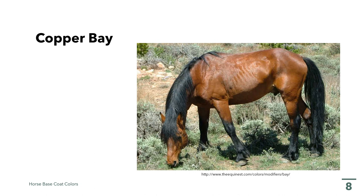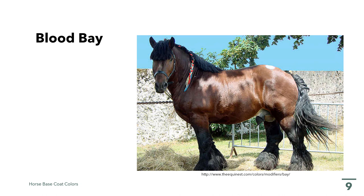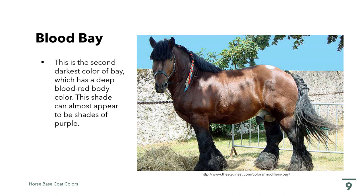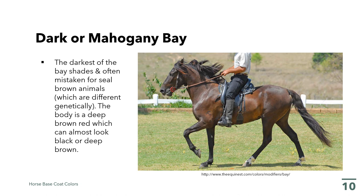The copper bay tends to be brighter, like a copper penny, and the coat has a rich orange-red body color. Another variation is the blood bay, which is the second darkest color of bay, with a deep blood-red body color — the shade can almost appear to be shades of purple. We also have the dark or mahogany bay, which is the darkest of the bay shades, often mistaken for steel brown animals. The body is a deep brown-red, which can almost look black or deep brown.